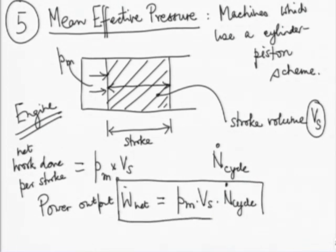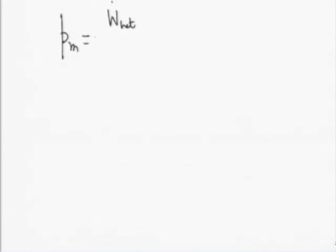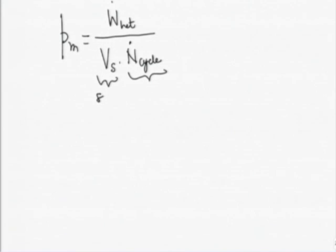This equation defines p_m, the mean effective pressure. Rearranging, p_m equals W dot net divided by stroke volume times n dot cycle. This represents: the speed of the engine (n dot cycle), the size of the engine (stroke volume), and the output of the engine. Although p_m has units of pressure, it represents the power output per unit stroke volume for a given size and per unit speed.